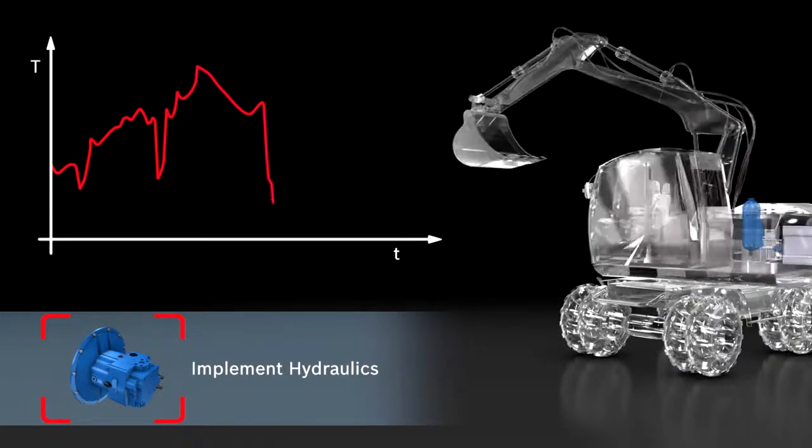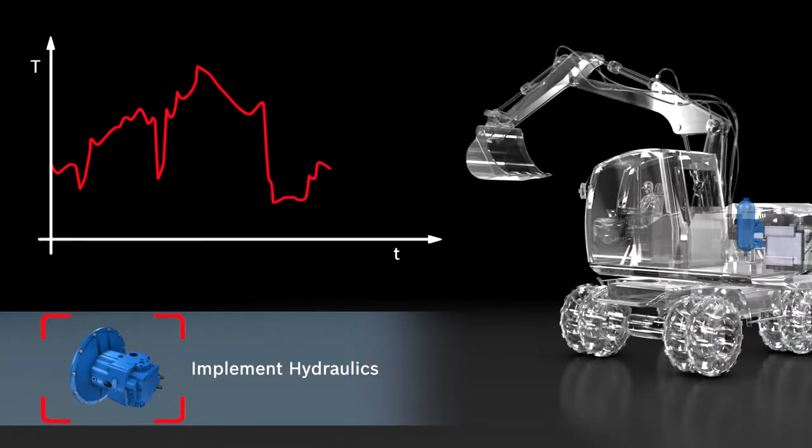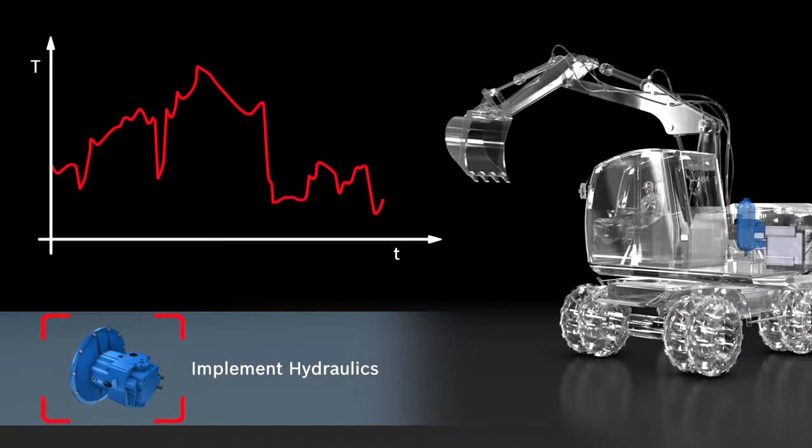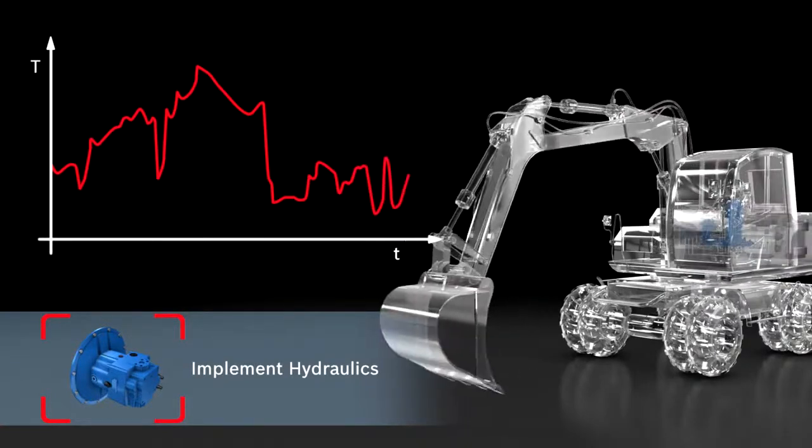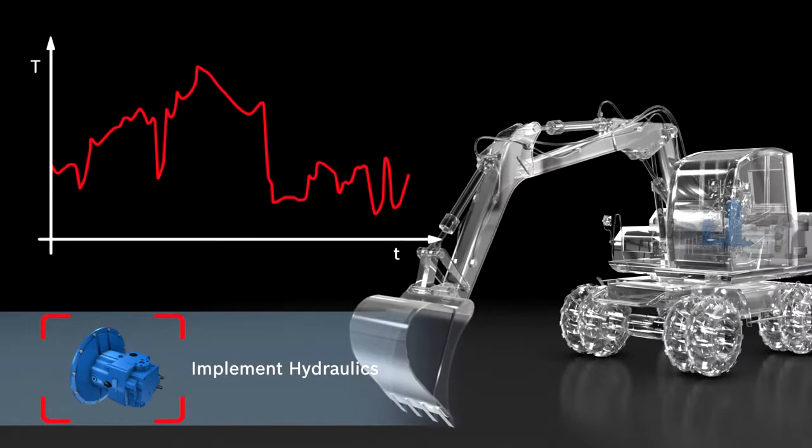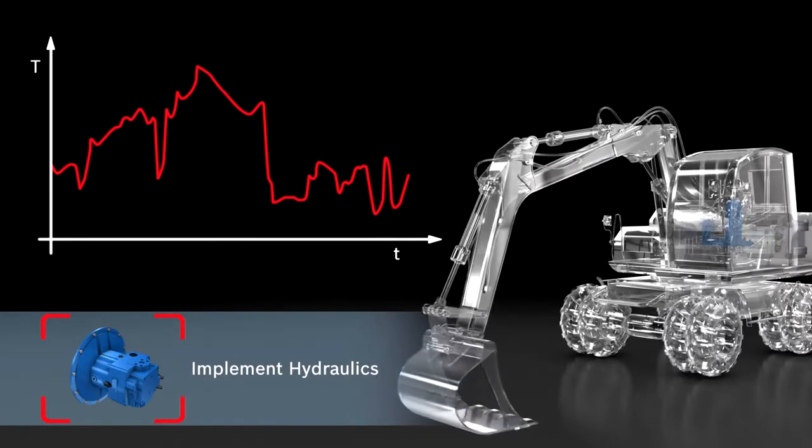The combustion engine must follow with the corresponding dynamic. In doing so, it changes its operating points constantly and works closer or further away from its optimal operating point, which results in varying efficiency.